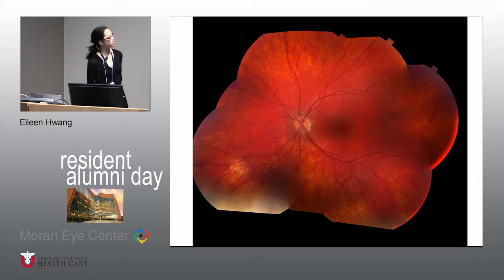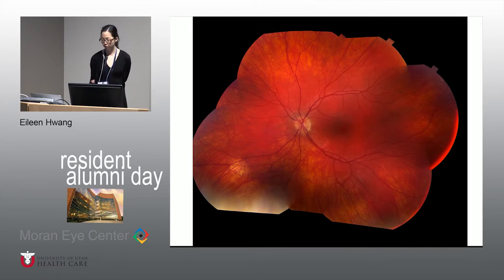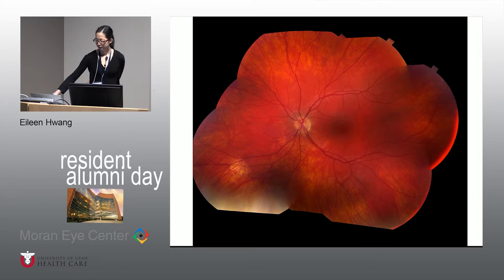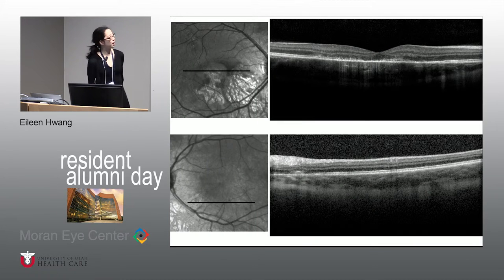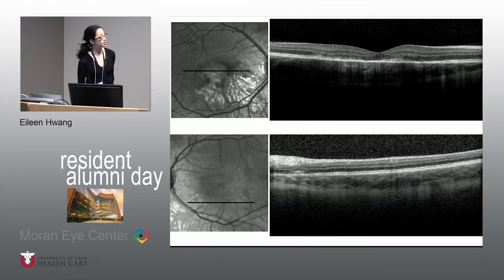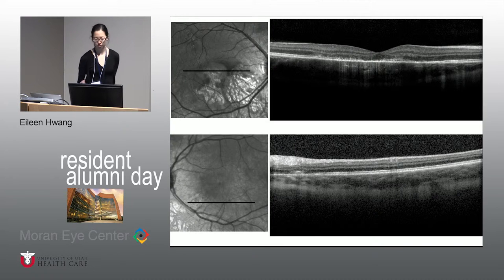She had a few lesions in her left eye as well — in the posterior pole and periphery. On optical coherence tomography, she had some disruption of her inner segment/outer segment junction, as well as some subretinal hyperreflectivity.